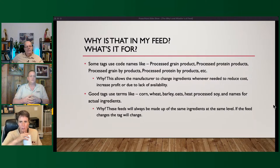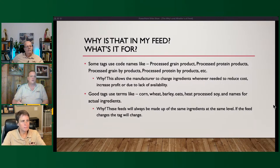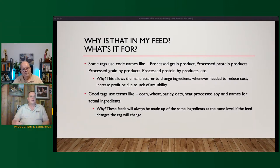They don't have to tell you what they changed. You've been raising chickens long enough — you've opened up bags and said, 'Oh, this doesn't look the same as it did three weeks ago.' They're doing it to reduce cost, hold cost down, increase their profit, or if there's a lack of availability for a certain grain it allows substitutions. It's a broad term, so you don't know what's in that 'processed grain product' — it could be corn, oat, wheat, barley, could be all of them or only one.